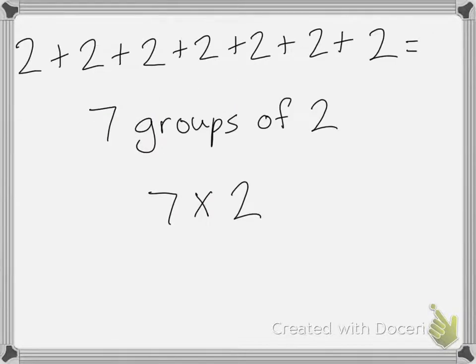Here I have 7 groups of 2: 1, 2, 3, 4, 5, 6, 7. And so I would say 7 times 2. In this case, it happens to equal 14.